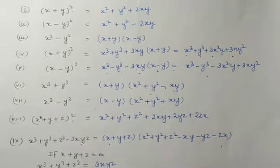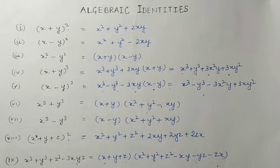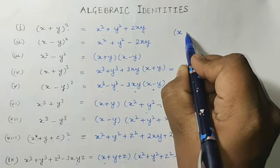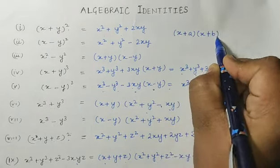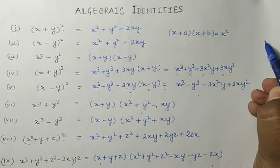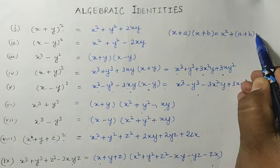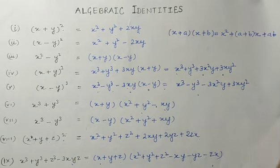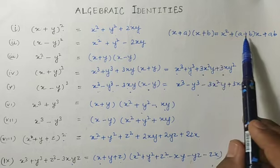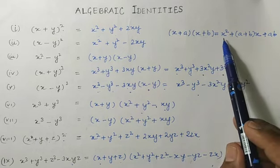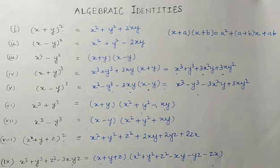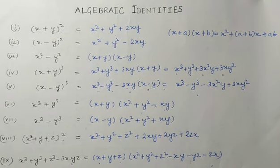You should learn all these identities very well so that you can solve the questions easily. One more identity is: (x + a)(x + b) = x² + (a + b)x + ab. When you simplify (x + a)(x + b) and take x as common, you finally get x² + (a + b)x + ab. Remember this identity too.